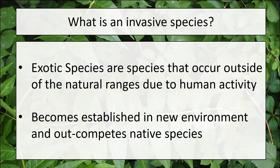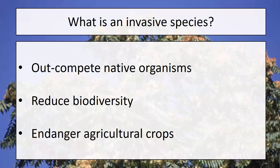Not only does an invasive plant out-compete our native species, but it also generally reduces our biodiversity — the abundance of different species drops down. Where you may have seen 30 or 40 different species of plants and animals, it's going to go down because that invasive plant is choking out opportunities for different species, absorbing all the niches in the environment. Beyond that, it endangers our agricultural production as well. Invasive species can do quite a bit of damage on agricultural lands.